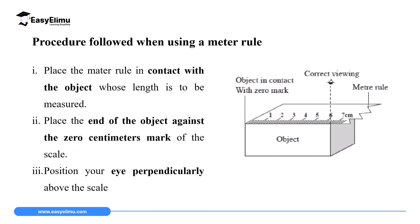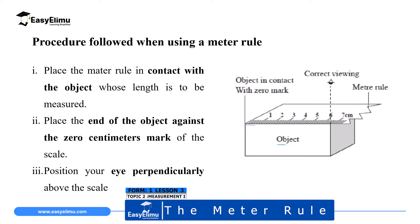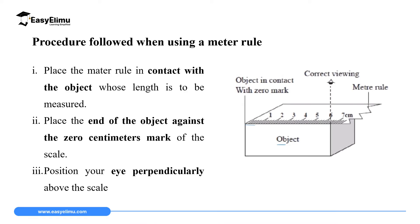There is a specific procedure to follow when using a meter rule. First, place the meter rule in contact with the object whose length is to be measured — as shown in the photo, the rule must touch the object. Second, place the end of the object against the zero centimeter mark of the scale. Third, position your eye perpendicularly — at 90 degrees — to the scale so that you can make a correct reading. Viewing at an angle will give a wrong reading.